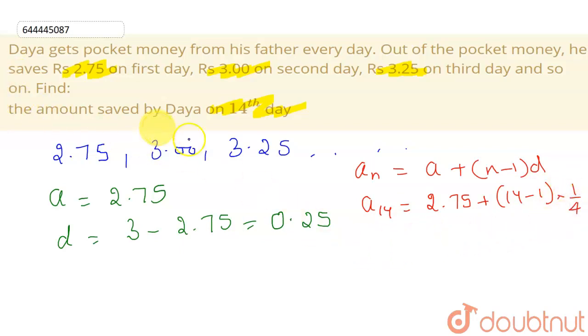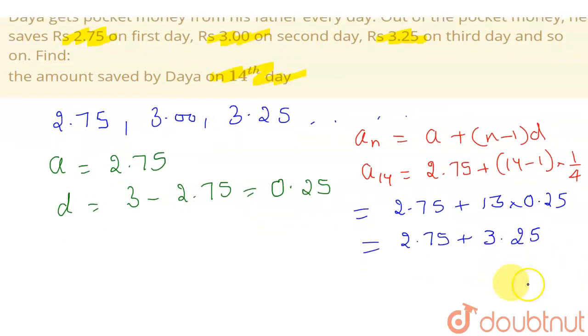So this will be equal to 2.75 plus 13 into 0.25. This will be equal to 2.75 plus, by multiplying these two terms I will get 3.25. And on adding these two I am getting 6. So he will save 6 rupees on the 14th day.